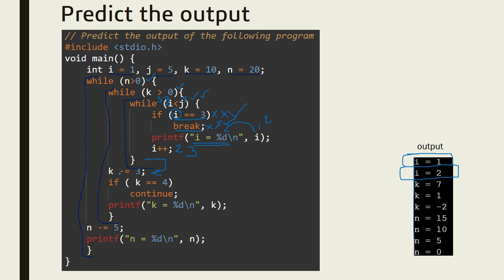After the break, k is decremented: k equals k minus 3. The initial k value is 10, so 10 minus 3 equals 7 — k is now 7. It checks if k equals 4; k is not equal to 4, so the continue statement is not executed. It prints the current value of k, which is k equal to 7.